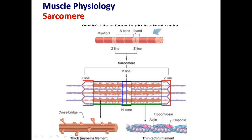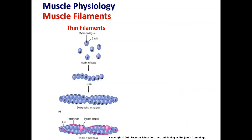To recap: at either end of the sarcomere we have an I-band containing only thin filament. Most of the length of the sarcomere is made up of the A-band, containing both thick and thin filament. At the center is the H-zone, which contains only thick filament — there is no thin filament present in the H-zone.